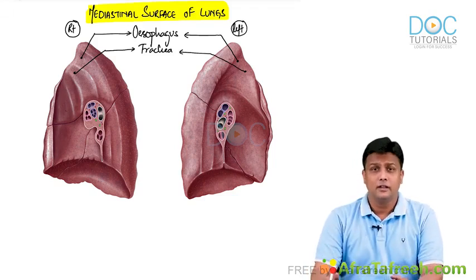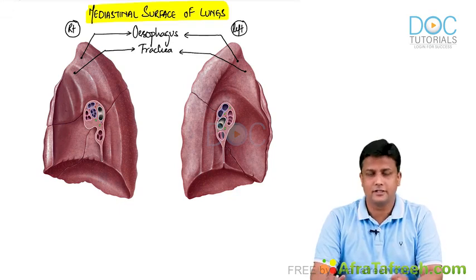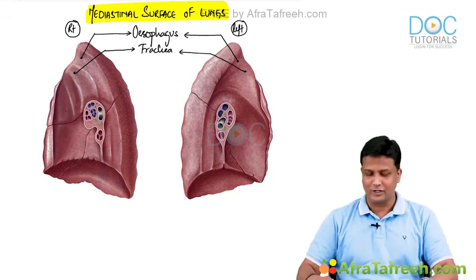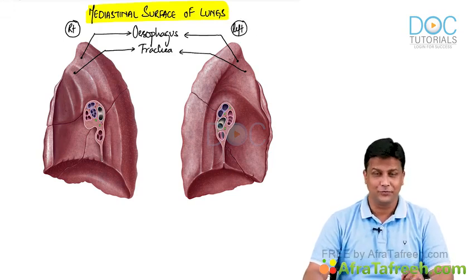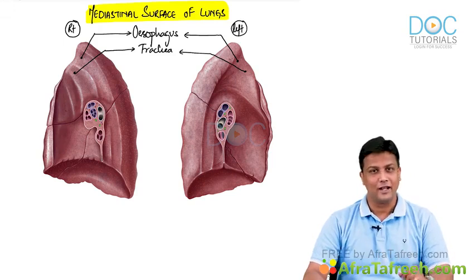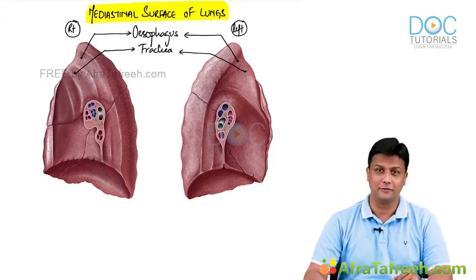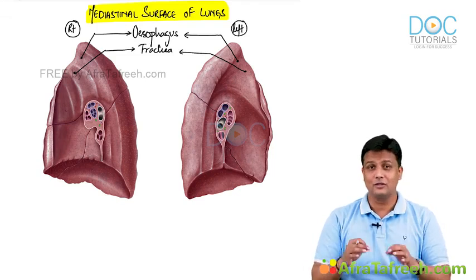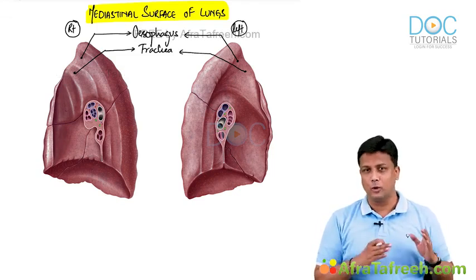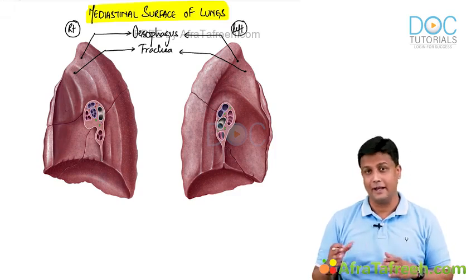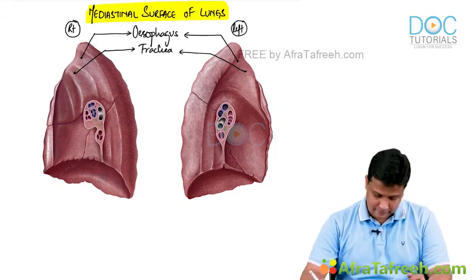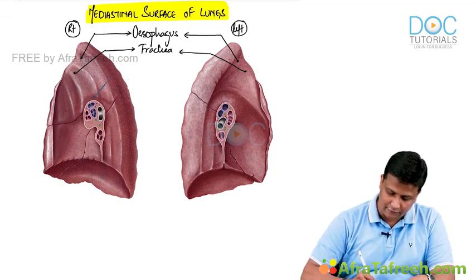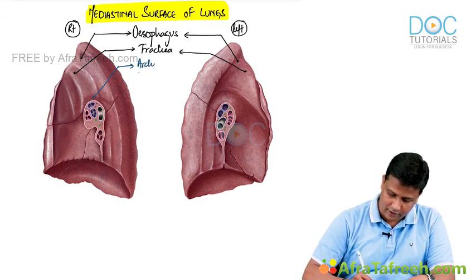Whenever you are learning about the relations of the mediastinal surface of the lung, don't panic. First, try to apply simple logic: esophagus and trachea are related to both lungs. Now recall from the previous topic of the root of the lung — above the root of the right lung, the arching structure is the azygos vein, and above the root of the left lung, it is the arch of aorta. So above the root of the right lung, this impression here is representing the arch of the azygos vein.